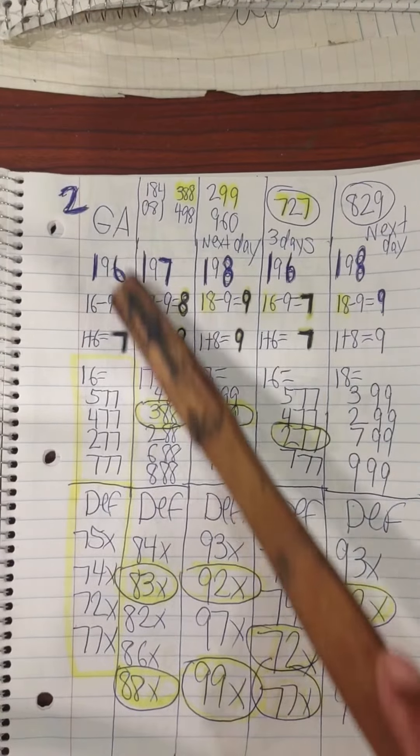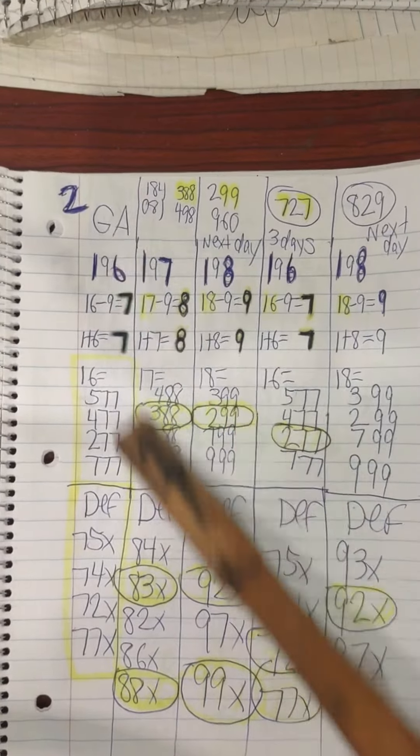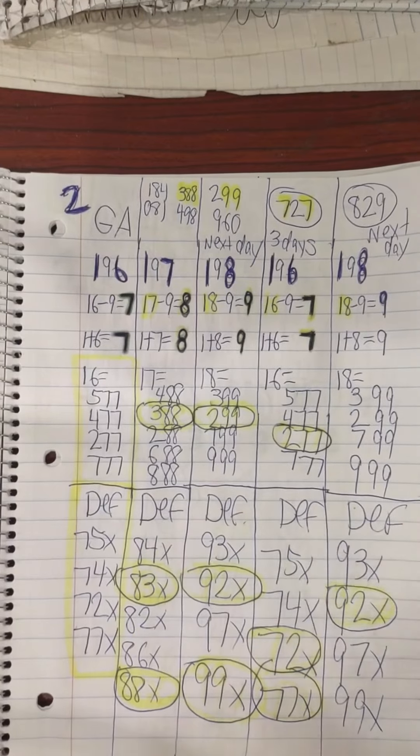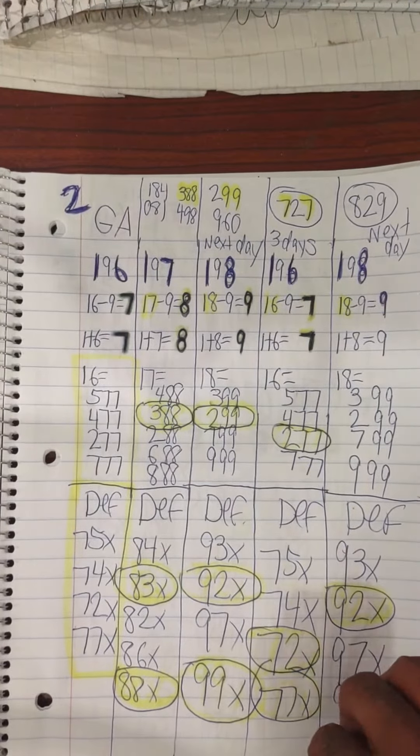You have to watch the YouTube video to understand any of these workouts. This pattern two for Georgia needs a 7-7 that can follow behind the 1-9-6. If they don't get the 7-7, they will receive at least two of these pairs. You have to watch the video to understand this pattern.